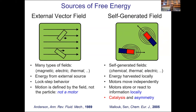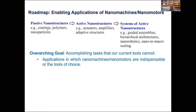We're interested in things that harvest energy locally, make their own decisions, and act on those decisions. In our case this involves catalysis, much like what living systems do. The field has progressed from passive nanostructures like coatings and polymers, to active structures like actuators and amplifiers, to what we think should be the next step: systems of active nanostructures. The goal is to accomplish tasks that no other tool can do—these nanomachines must do something that nothing else can.